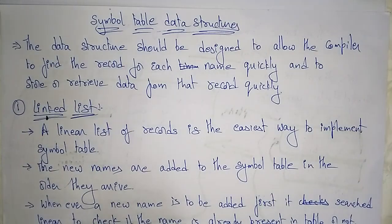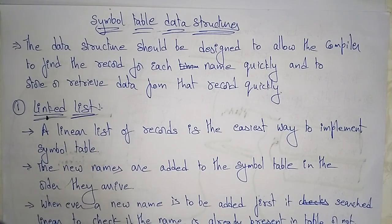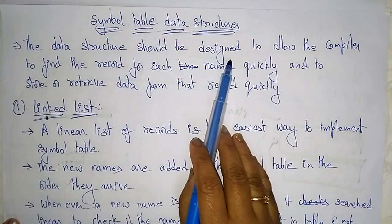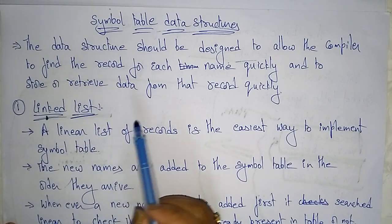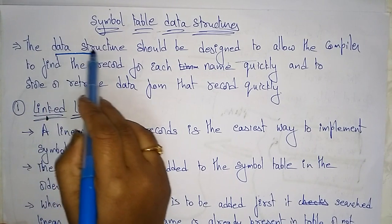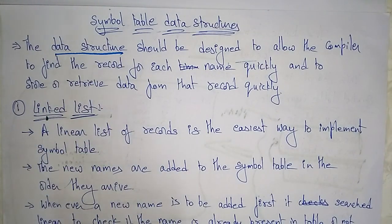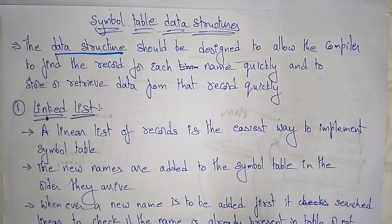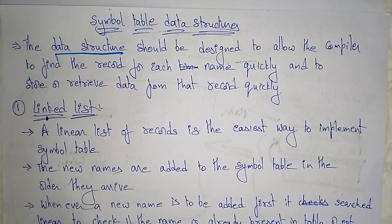Let's continue with the symbol tables topic. In the previous video I explained what the symbol table was and how you are going to implement it. Now let's see the symbol table data structures. The data structure should be designed to allow the compiler to find the record for each name quickly and to store or retrieve data from that record quickly. The symbol tables are used to store information regarding the program, and with the help of data structures the compiler gathers, stores, and retrieves information quickly.